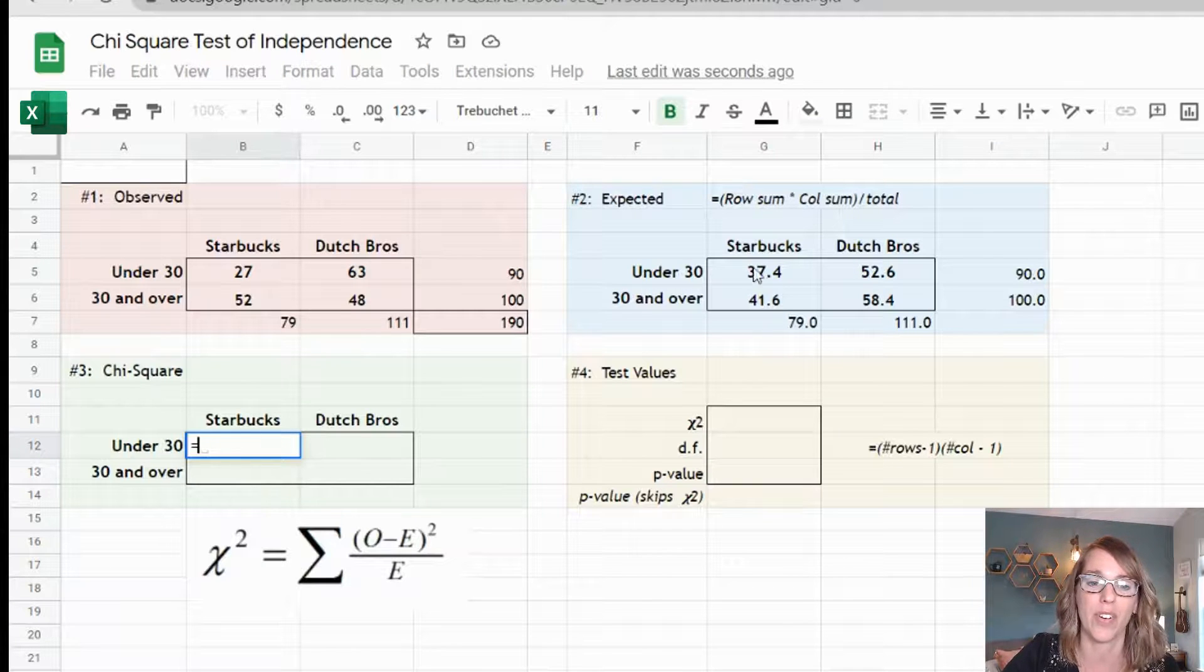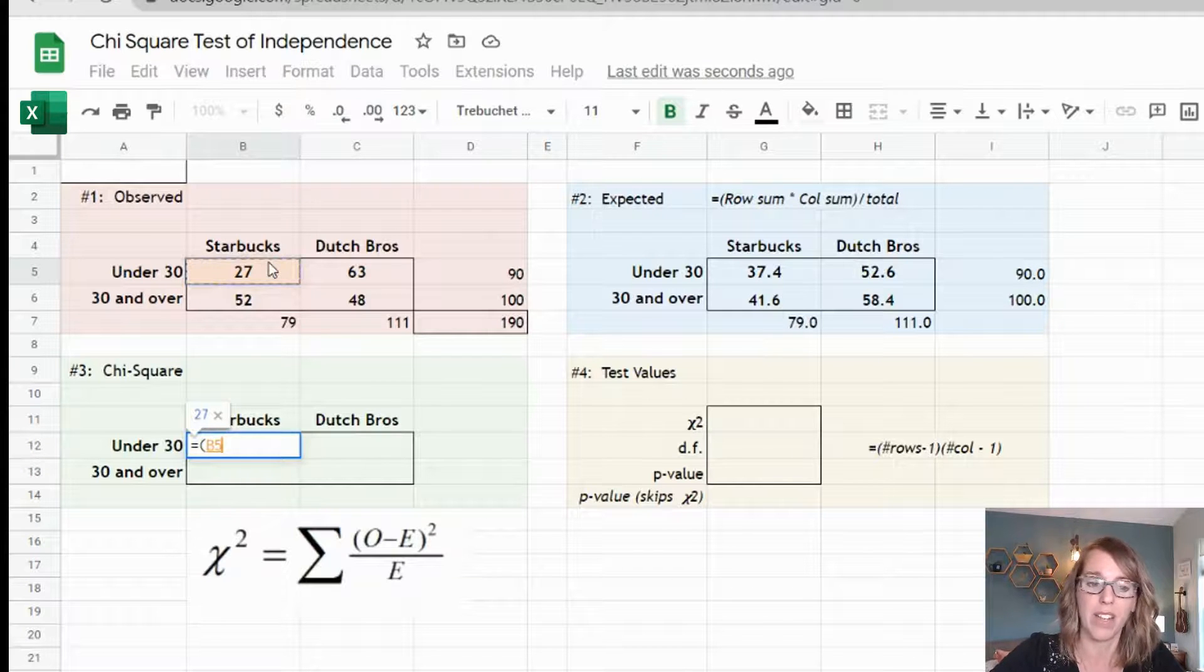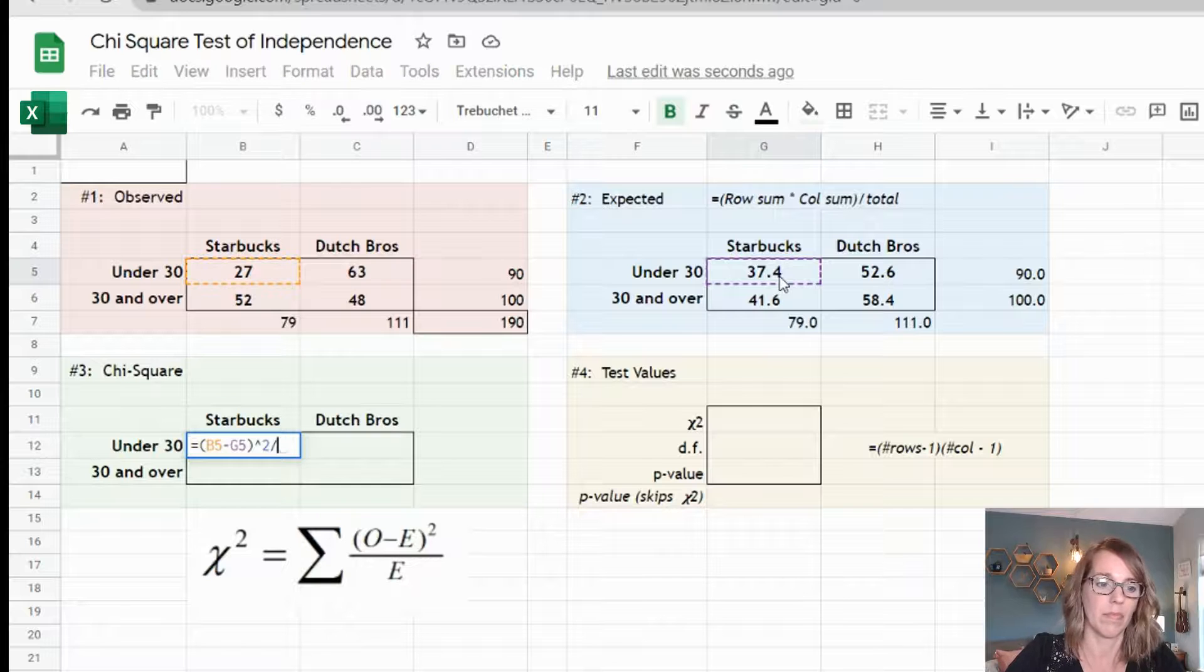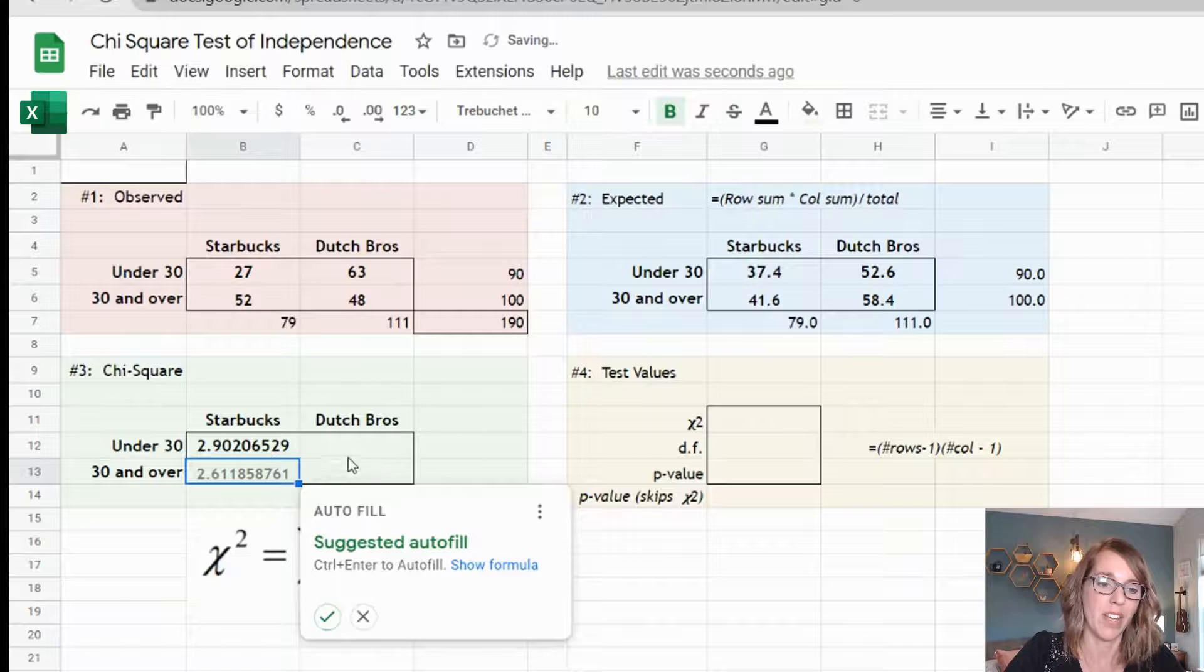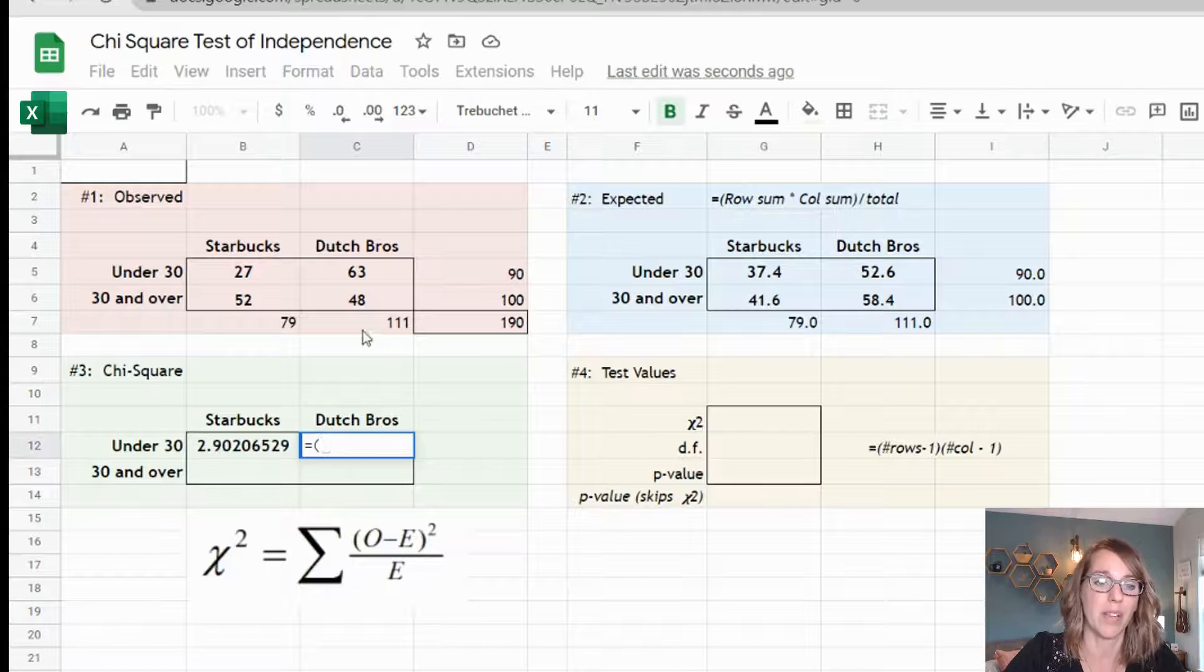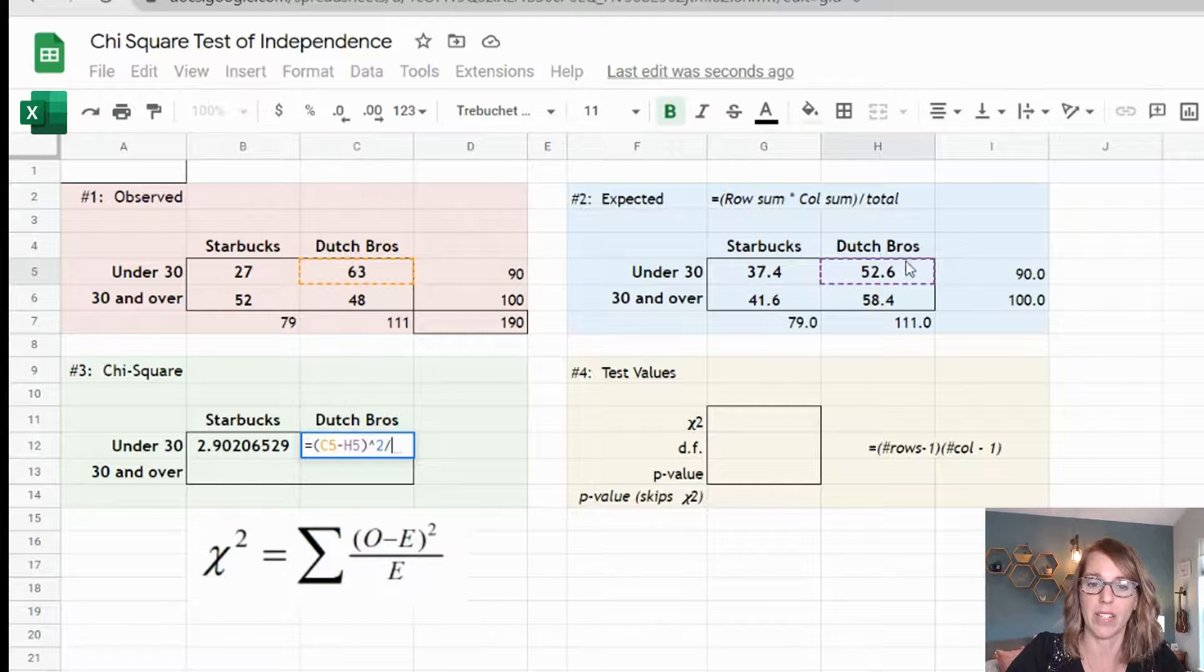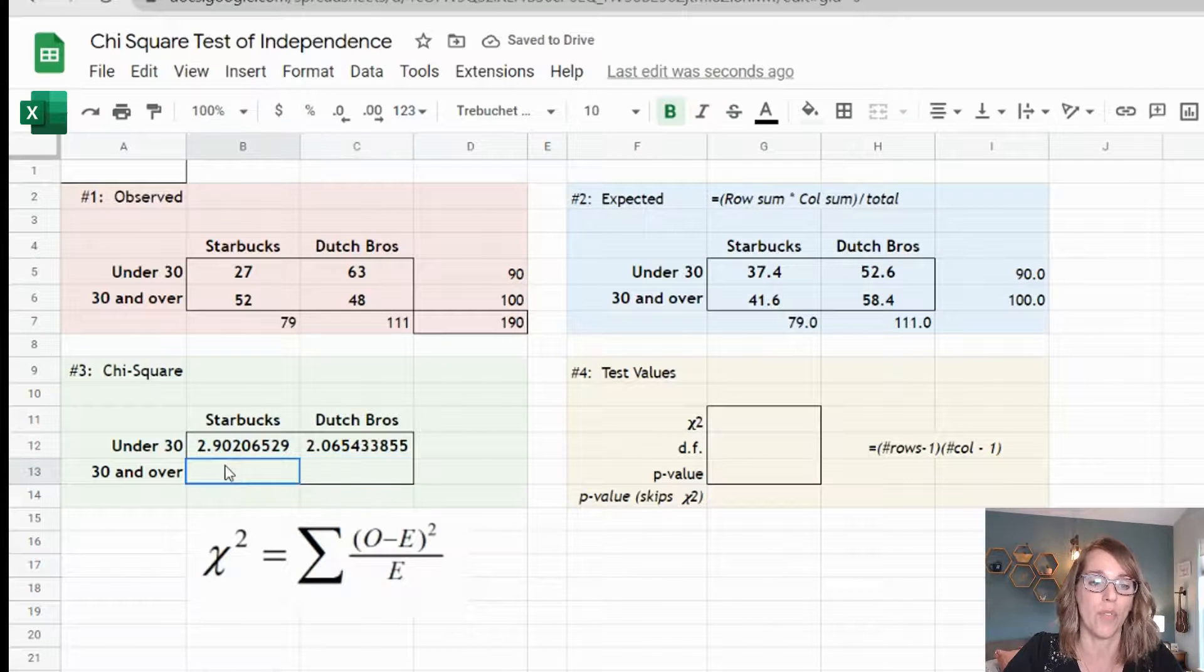I'm going to do the Starbucks under 30. So I want to do parenthesis observed, so I grabbed that 27 minus expected parenthesis squared divided by my expected value. So back to my expected table here. I can do that to the next one as well. So equals parenthesis observed minus expected squared divided by expected. I'm going to do the same thing for my 30 and over row.